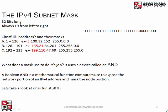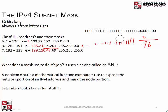For class B, the range is defined by the first octet, and the class B subnet mask is 255.255.0.0 — that's 16 ones followed by 16 zeros. I keep emphasizing 'classical system' because later we're going to talk about classless systems with subnetting.